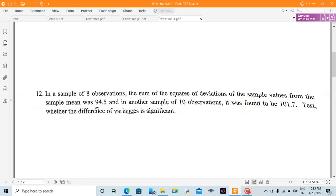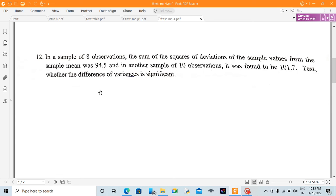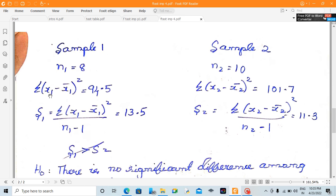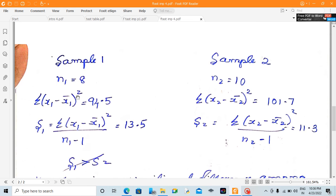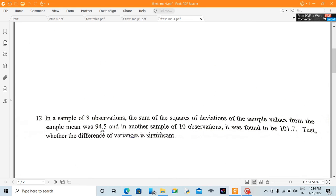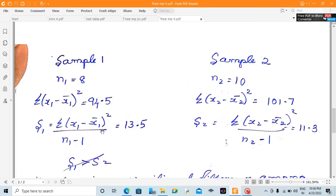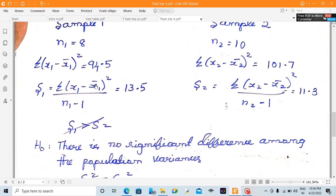They have given that the square of the deviations of the sample values from the sample mean was 94.5. We can define that as summation of (x1 minus x1 bar) whole square, which equals 94.5. To get S1 squared, divide that value by n1 minus 1. So n1 minus 1 is 7.